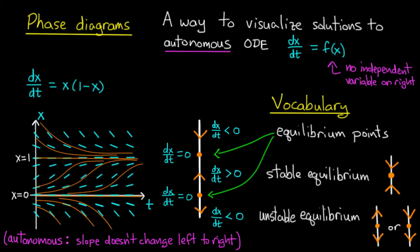Now after you figure out how to do that, I have a question. Is there any phase line, any configuration of stable and unstable equilibria which could not occur as the phase line for a differential equation?